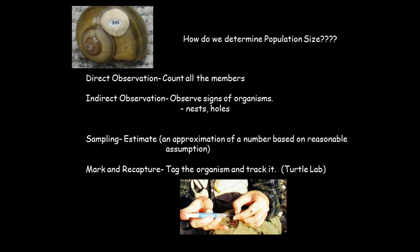Another method that is a little bit more detailed is called sampling. What you're going to do is estimate an approximation of the number based on a reasonable assumption. You're going to take a certain area and estimate roughly how many birds are found there. You can use some mathematics to help you discover the sampling size and figure out roughly how big the population is.